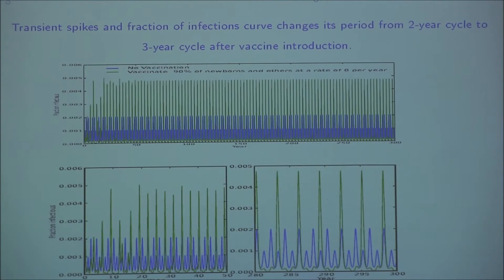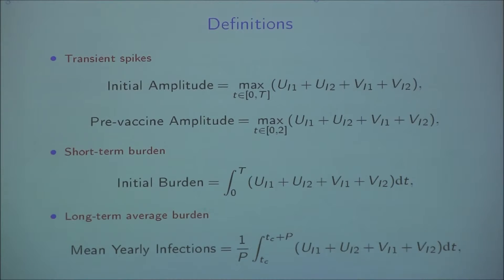This raised a question when we tried to be more systematic. We should look at what is happening in the long term, because we know there are transient spikes in the beginning, but vaccine introduction can also change the limit cycle in the long term. So to compare, we define the initial amplitude as the maximum total infections over the first T years after vaccination, and compare it with the pre-vaccine amplitude — the maximum over one full period of the pre-vaccine scenario. If the initial amplitude is higher than the pre-vaccine amplitude, it means we have a transient spike.